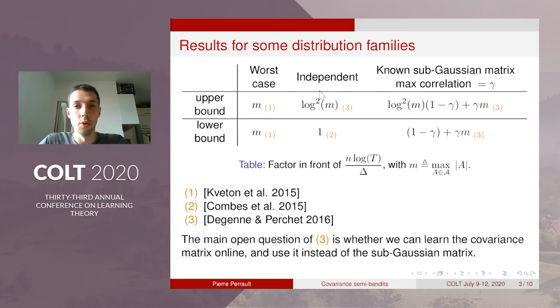In contrast when you have small assumption on the family you can get more tighter upper bounds. So in the case you know that the outcomes are independent, Degenne and Perchet proved this upper bound with a polylogarithmic factor in front of the regret. And Combes proved this lower bound.